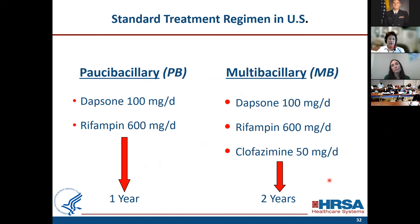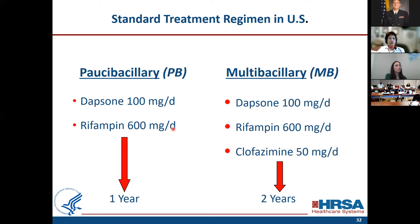The standard treatment regimen in the United States, started over 40 years ago and established at our mother institution in Carville, has not changed. For multibacillary lepromatous cases: daily rifampin, daily dapsone, and daily clofazimine. For patients with tuberculoid or paucibacillary cases: two drugs — rifampin and dapsone. The WHO regimen differed: rifampin only once a month and only for one year, and paucibacillary disease treated for only six months with once-a-month rifampin.